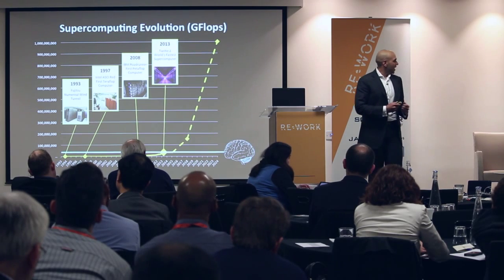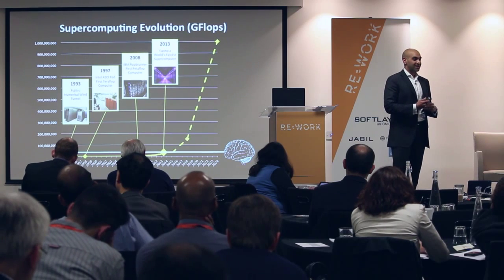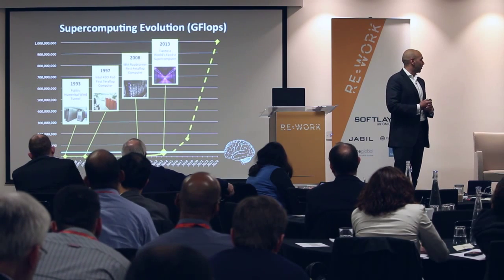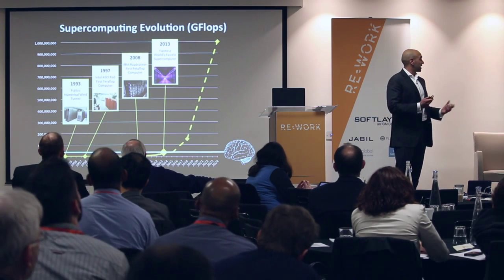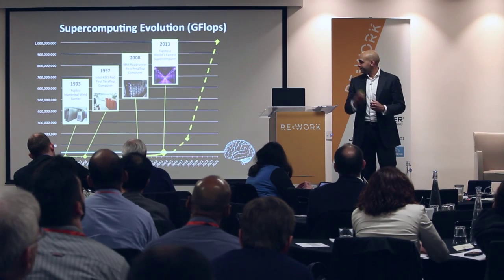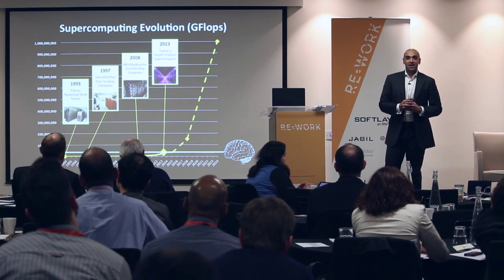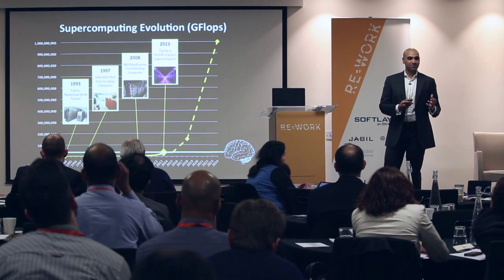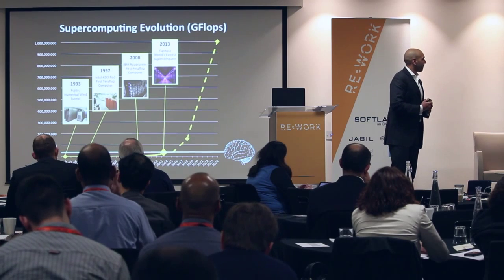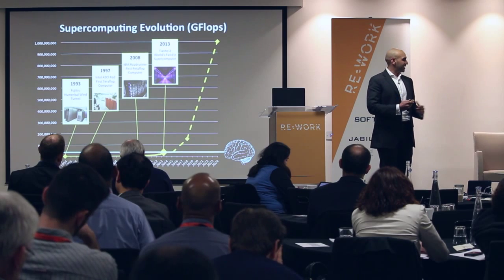It's thought the brain can perform 38 quadrillion calculations per second — that's 38,000 trillion calculations per second, or 38 petaflops. In 1997 we had the first supercomputer capable of a teraflop — a trillion calculations per second. It then took 11 years for IBM's Roadrunner to come along in 2008 capable of a petaflop. Today's fastest supercomputer, Tianhe-2, is capable of 34 petaflops — 34,000 trillion calculations per second.